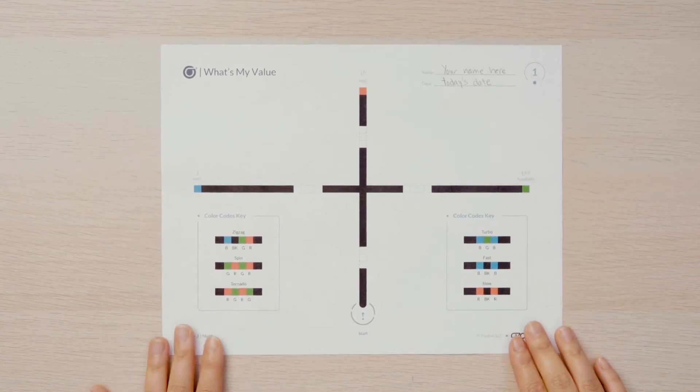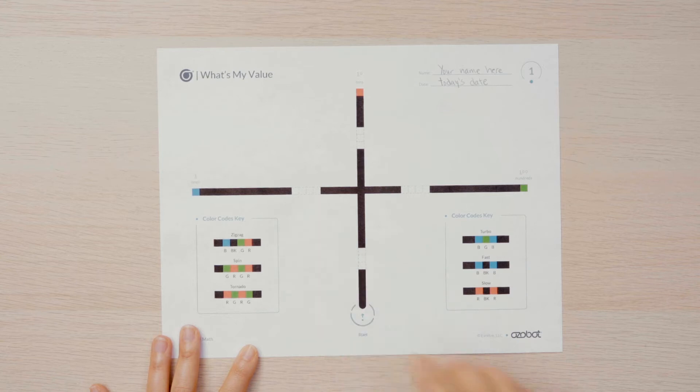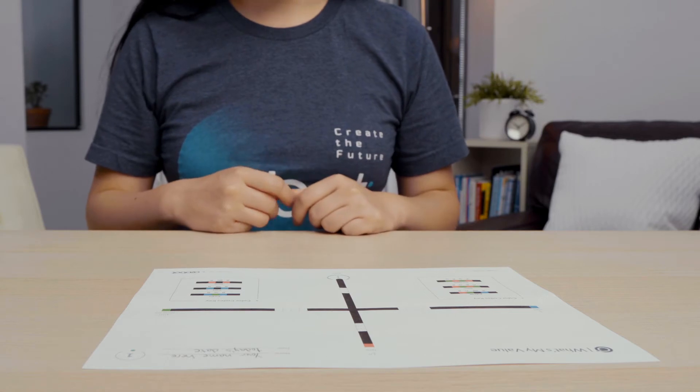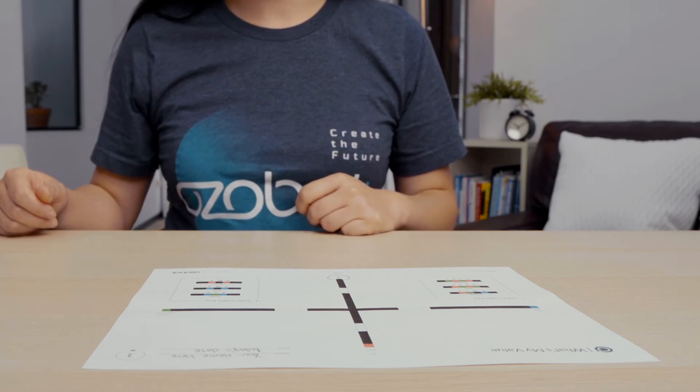You will also see that the pathways are missing color codes. You will use the color code key to choose and color sequences of three or four colors. I'll choose tornado, zigzag, turbo, and snail to complete my pathways on my map.